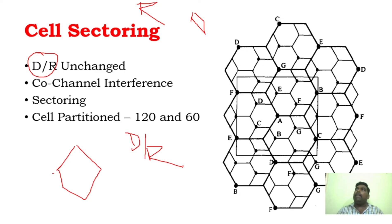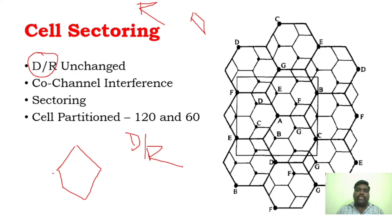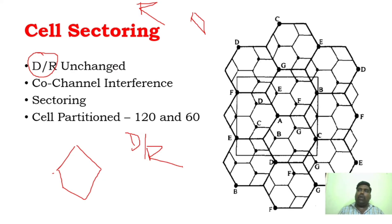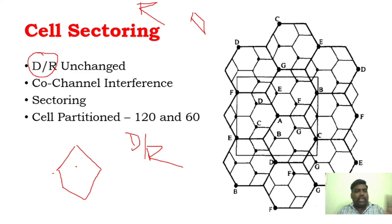When the D-by-R ratio decreases, capacity improves. For example, if one cluster uses 10 cells and the D-by-R ratio is reduced, it may use only 4 or 5 cells, so the number of clusters improves and that is why capacity improves. This is called cell sectoring.